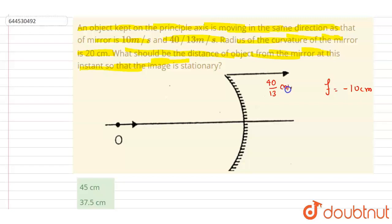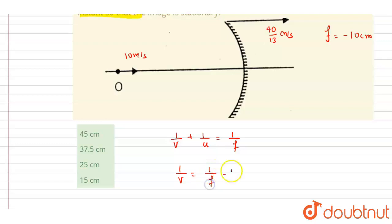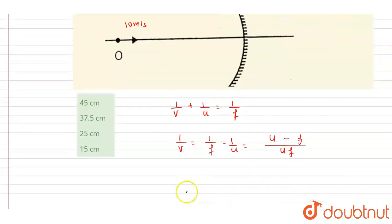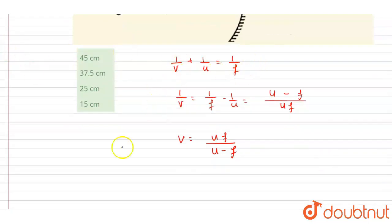The object velocity is 10 meters per second. We can write down the mirror formula: 1/v + 1/u = 1/f. So 1/v = 1/f − 1/u, which gives us (u − f) / (uf) = v. This gives us the value of v.